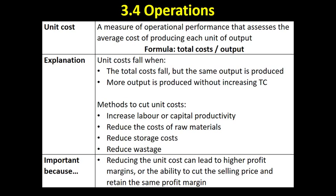So what can we do to cut our unit costs? We can make our workers work harder — we can increase labour productivity. Or we can make the capital that we've invested in, which represents a fixed cost, work harder. If we can increase our units of output using the same number of assets, then our unit cost should fall. If we can reduce the cost of raw materials, that obviously brings down the total cost. If we can spend less money on storing stock, that's also going to reduce the cost of production.